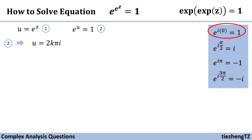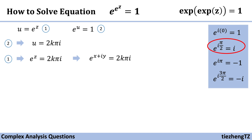Correspondingly, equation number one becomes e^z = u = 2kπi. So e^(x+iy) = 2kπi. When we see i, we can use its exponential form: i = e^(i·π/2).